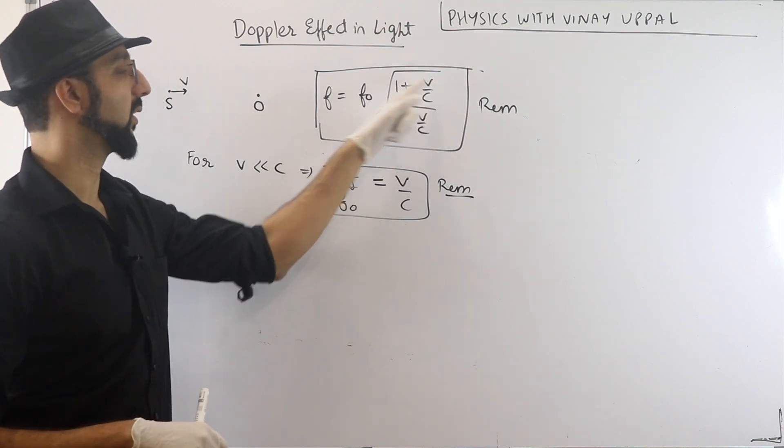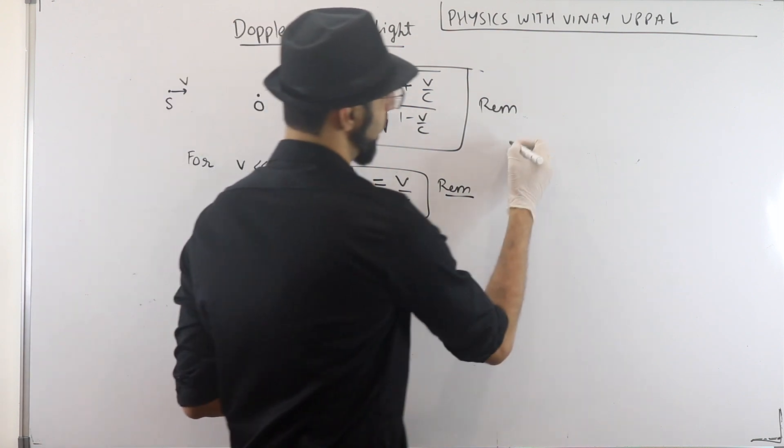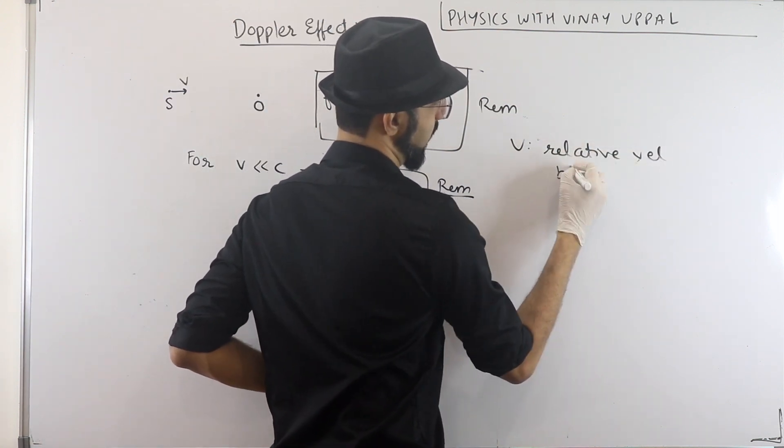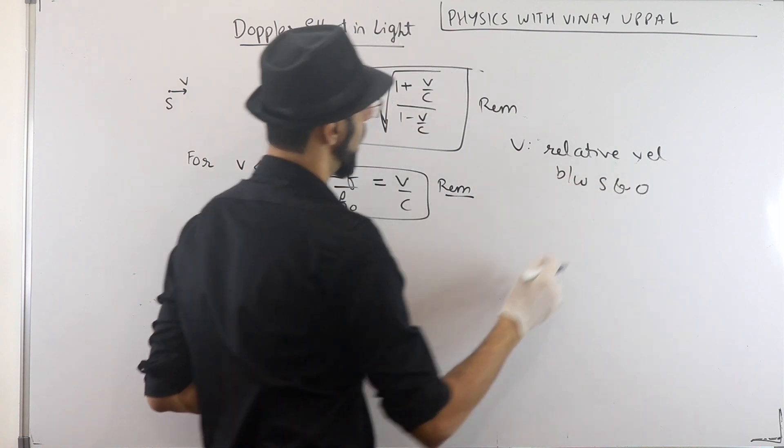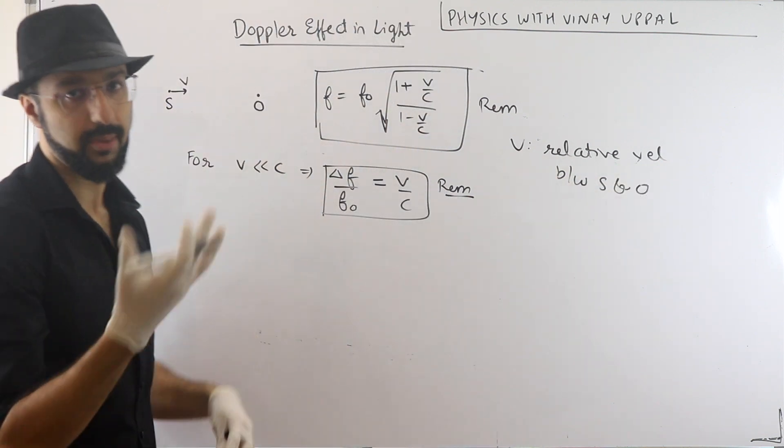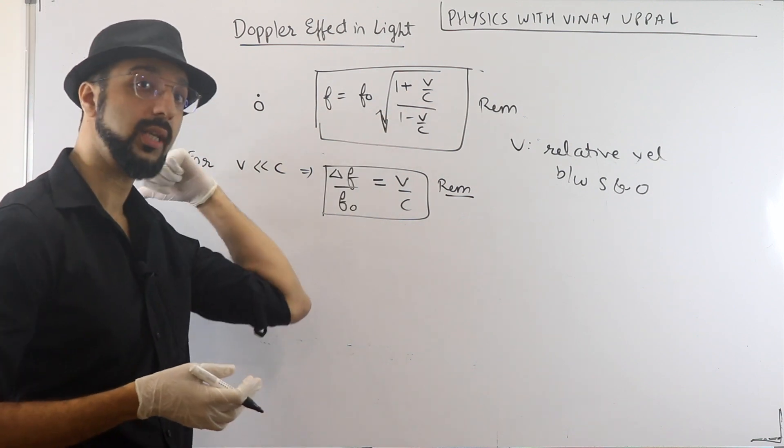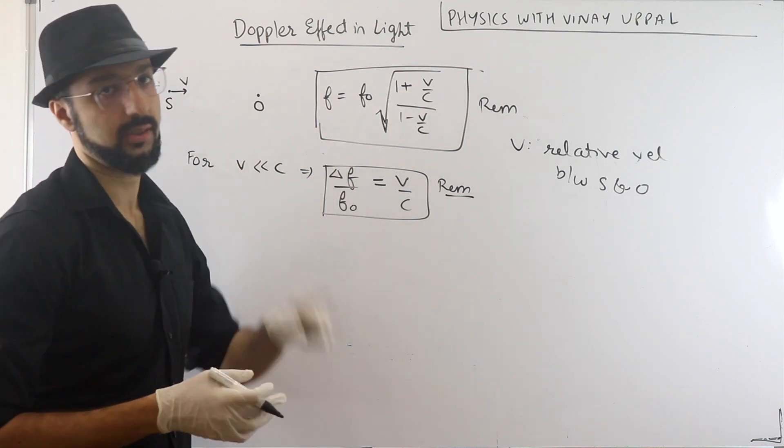What is v? v is the relative velocity actually between source and observer. So when we approach it, the frequency will increase. This will be up to plus and down to minus. If the source is far away, it will be up to minus and down to plus. So we will remember.